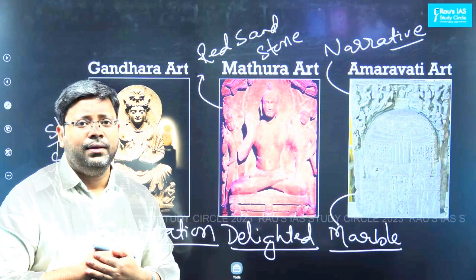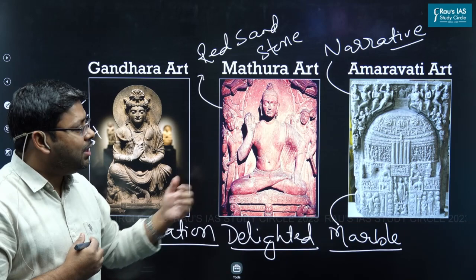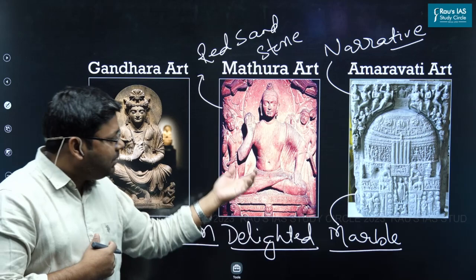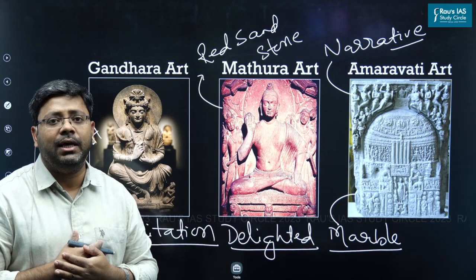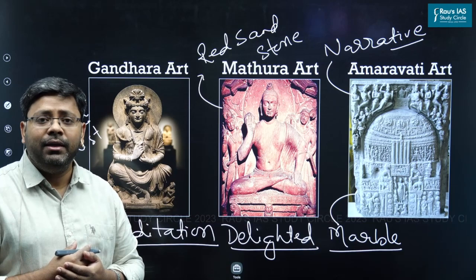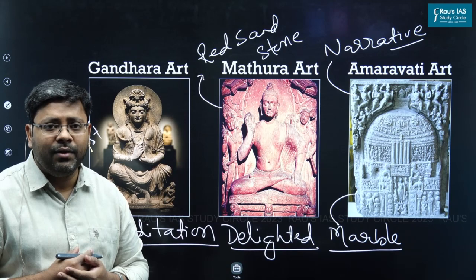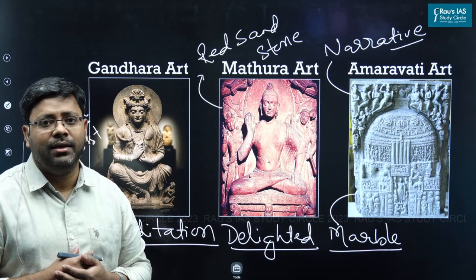Comparing Gandhara and Mathura art again — where Buddha is very spiritual in Gandhara style and very delighted in Mathura style — there is a marked difference between the ideas of wisdom and knowledge in West and East. In the West it is said that ignorance is bliss, whereas in India we say Vivek is anand — knowledge is bliss. That is why it is very natural that the Mathura Buddha is looking delighted, inspired by the indigenous or local tradition.